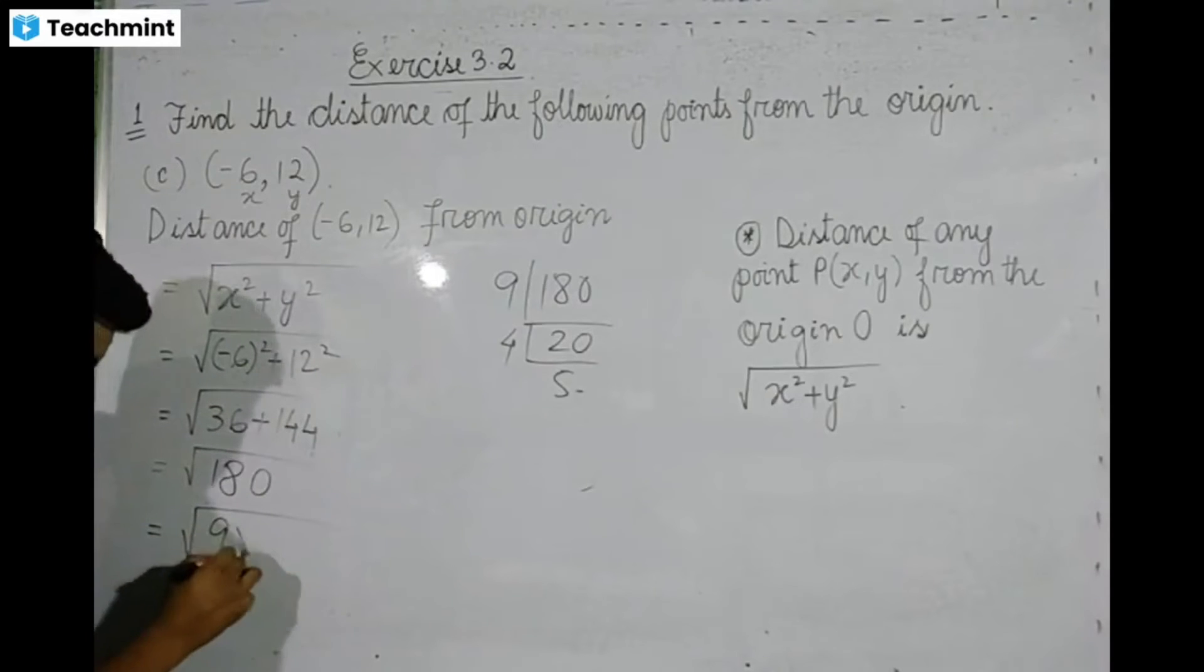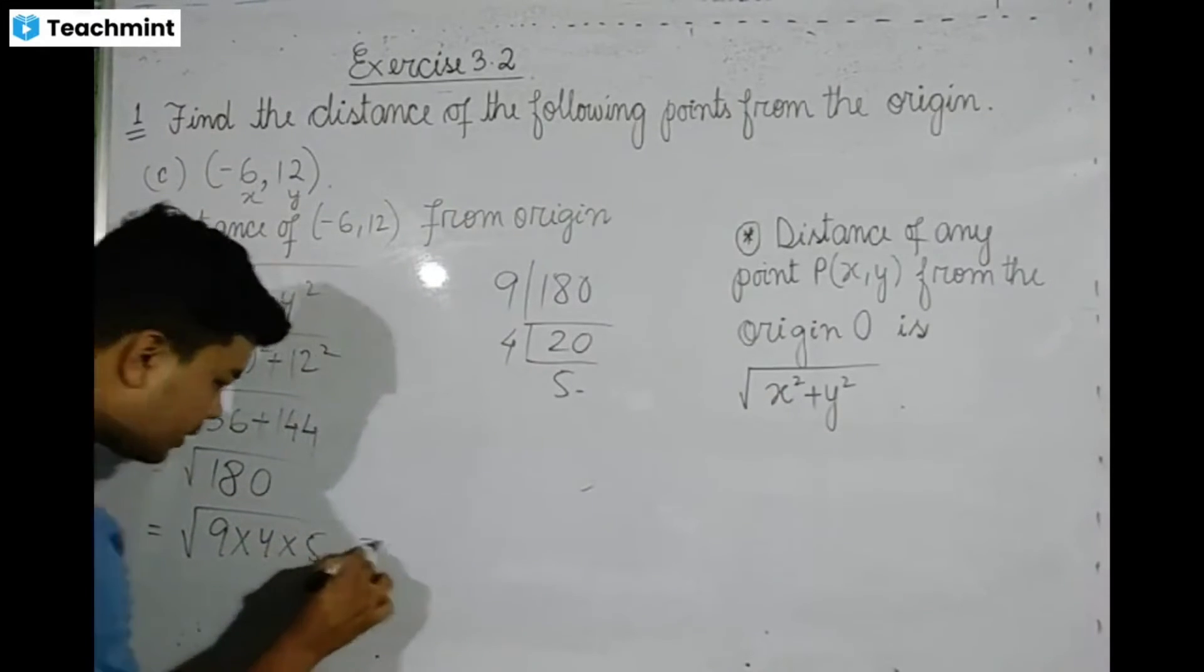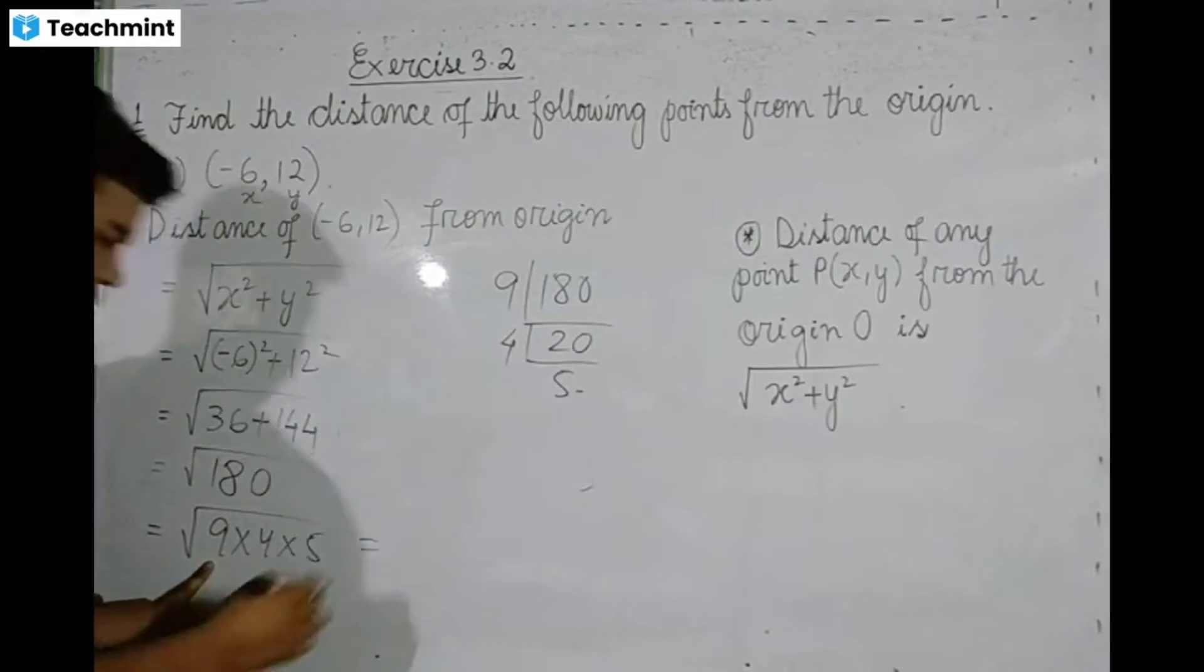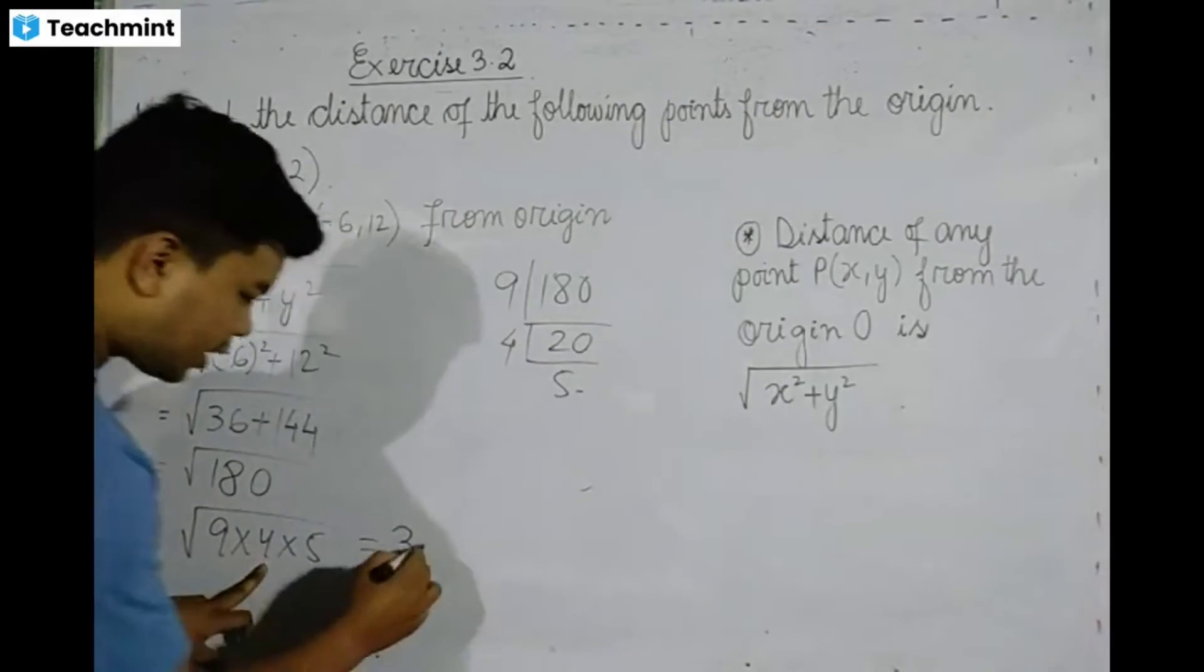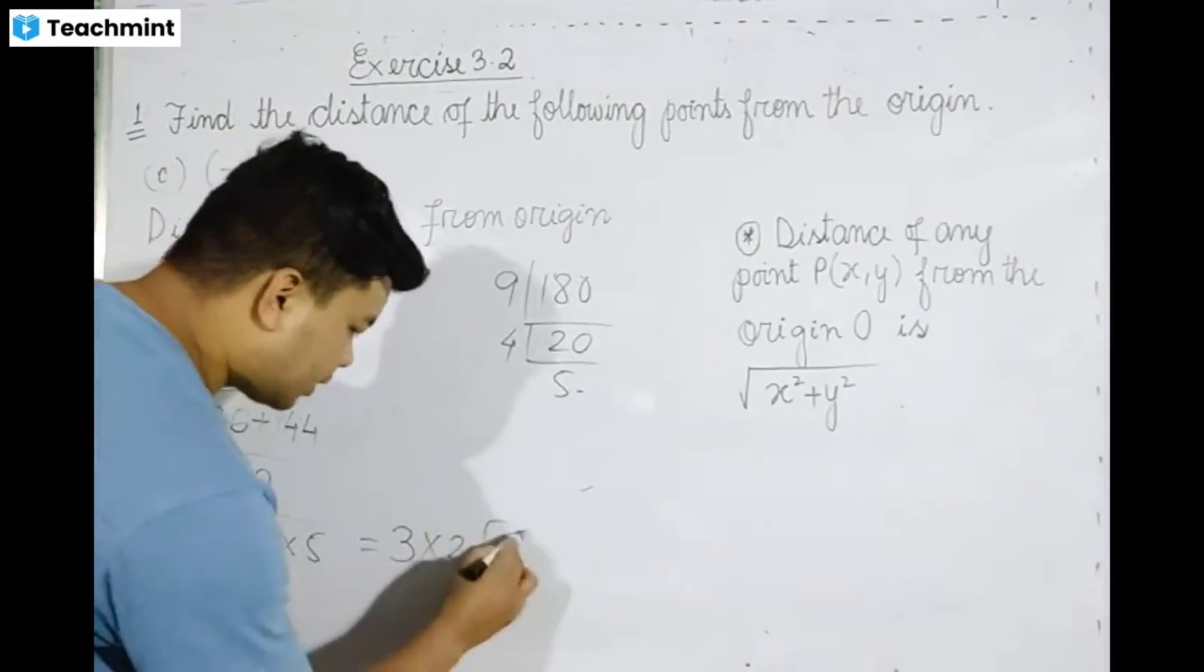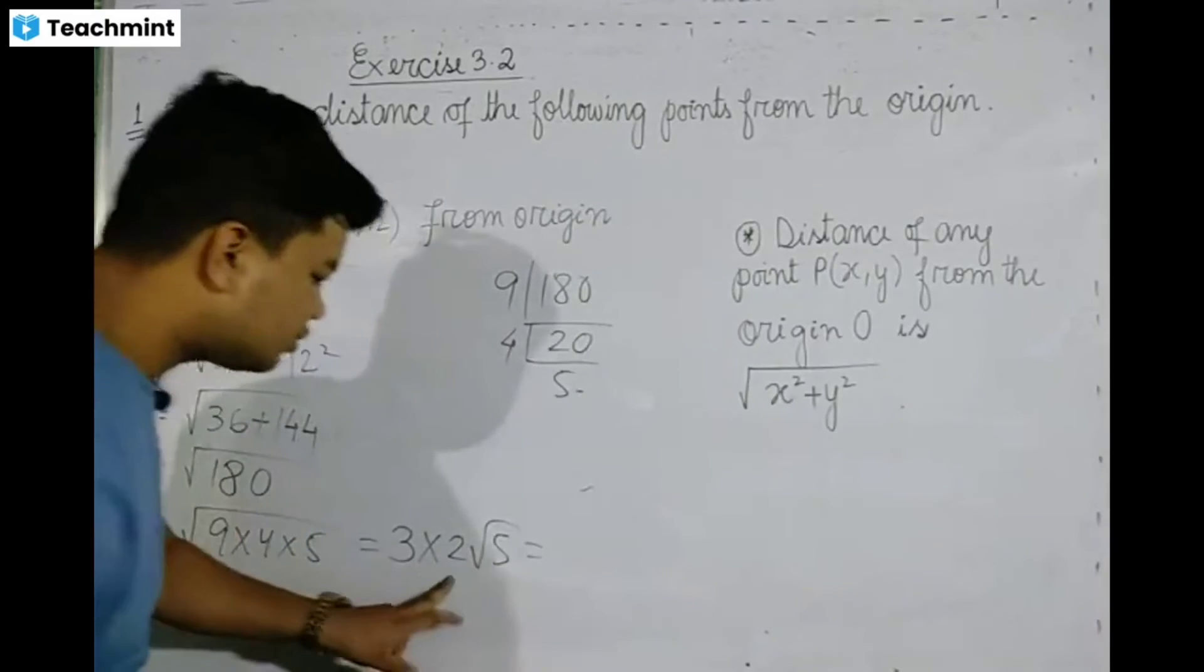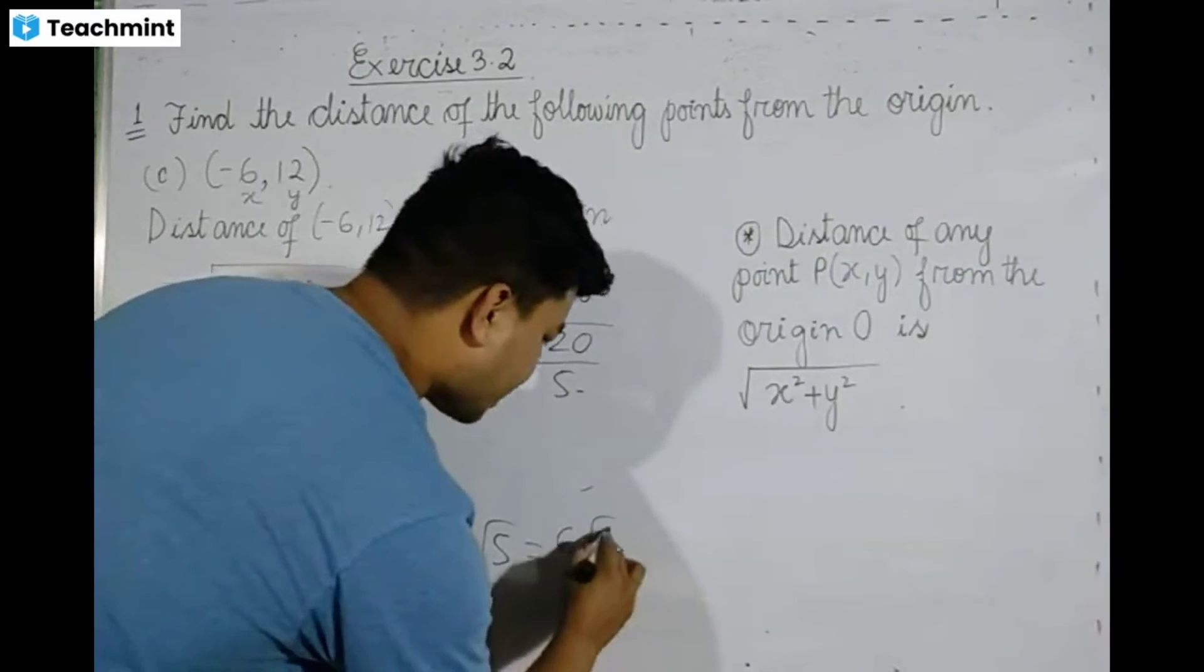9 into 4 into 5. 9 into 4. 3 into 4. 4 into 4. 2 into 5. 3, 2, or 6. 6 root over 5 units.